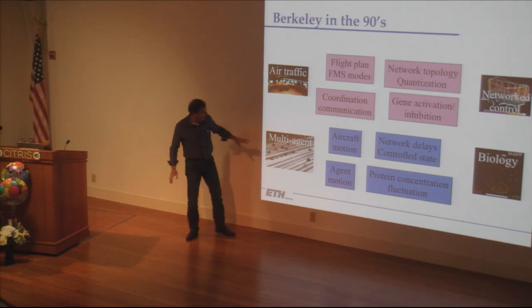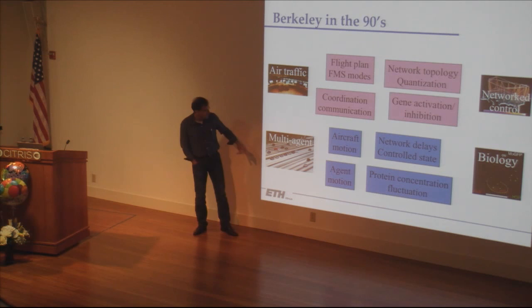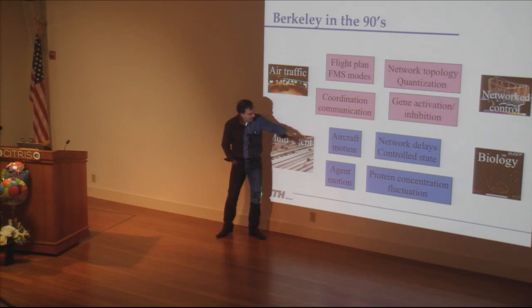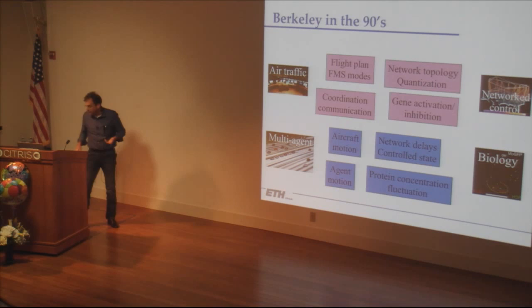Back then we'd explain why multi-agent systems — for example Praveen's path project, automated highway systems — had this feature that combined discrete and continuous dynamics. Coordination and communication among the agents, together with the motion of the agents, gave rise to these hybrid systems.